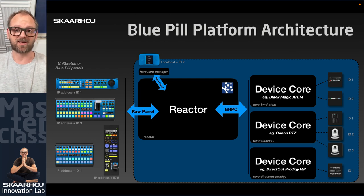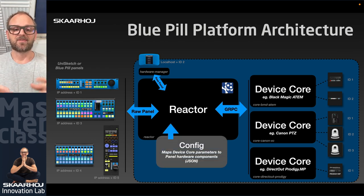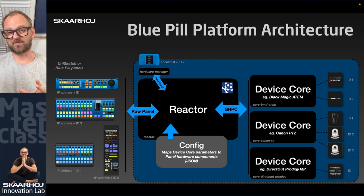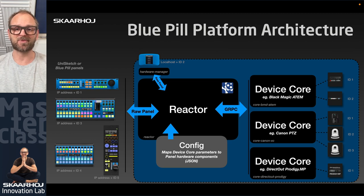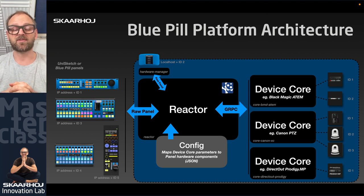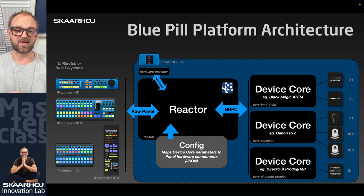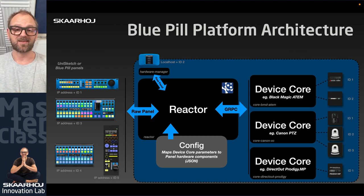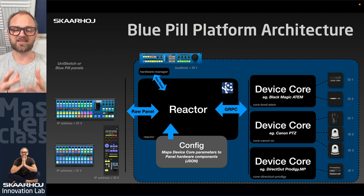Configuration is what binds everything together. To map device access onto panels and hardware components — displays, buttons, knobs, faders, joysticks — a configuration is needed. This configuration is written in JSON, so those who prefer a text editor can tweak configurations directly. That's how the device and panel dimensions are bound together, which is the main job of Reactor.